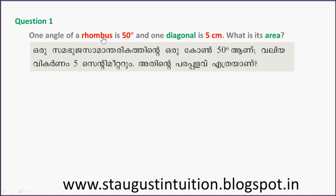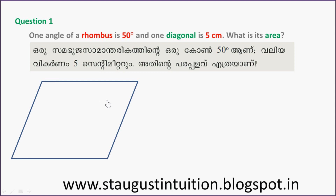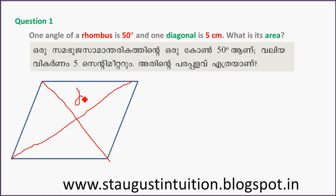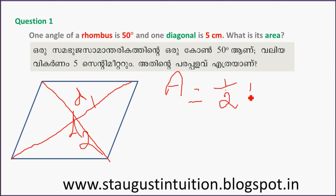For a rhombus, we have two diagonals. Suppose this is D1 and this one is D2. If we have two diagonals, we can find the area using the formula: area is equal to half into D1 into D2.